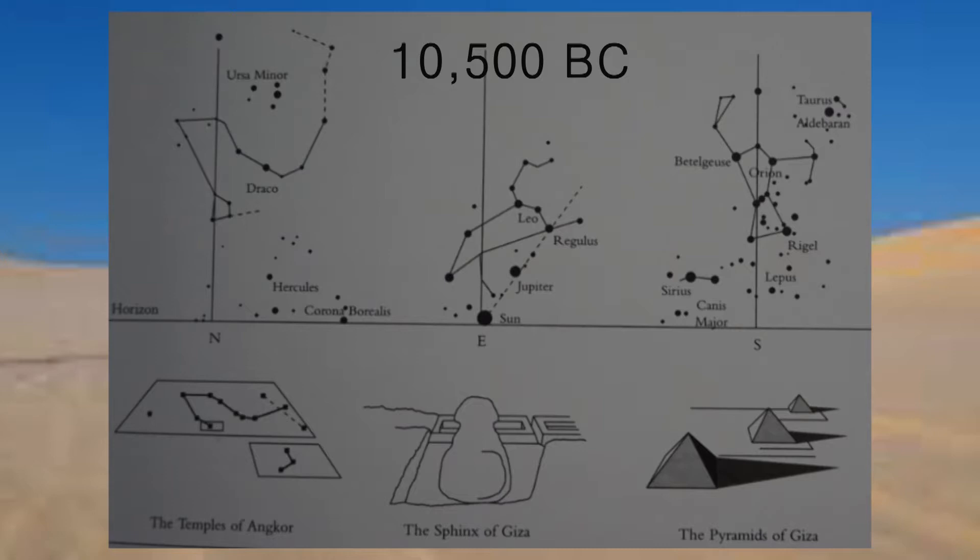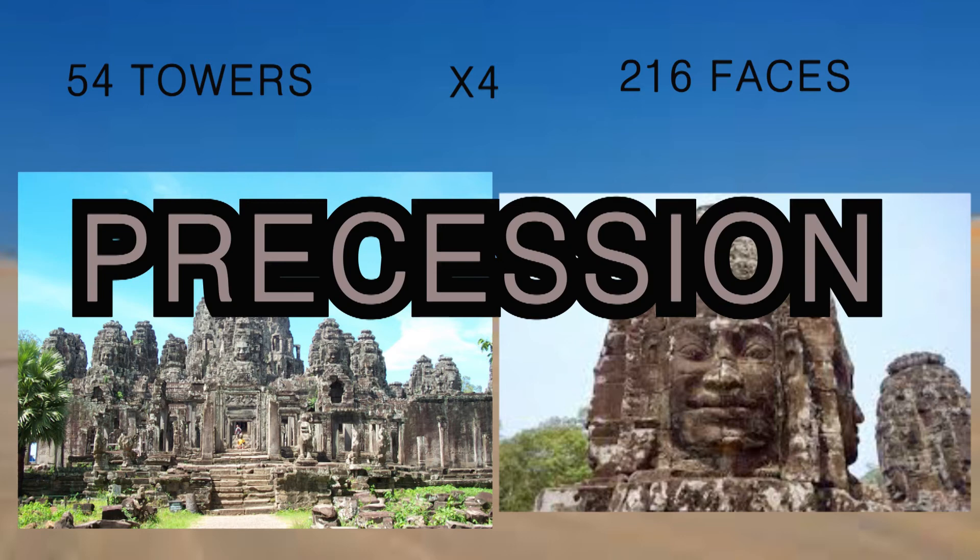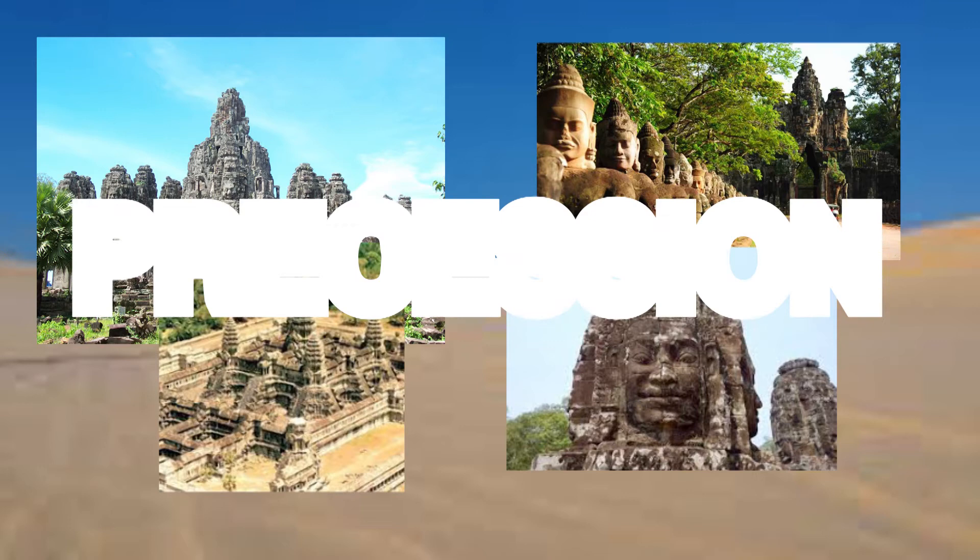None of this can be a coincidence. Also, the step pyramid of Bayon is surmounted by 54 massive stone towers, each carved with four faces facing north, south, east, west, making a total of 216 faces. Again, numbers of precession are built into the monuments. The numbers of precession appear all over Angkor Wat temples—they're in the bridges, they're in the faces, they're in the towers, they're everywhere. This cannot be a coincidence.